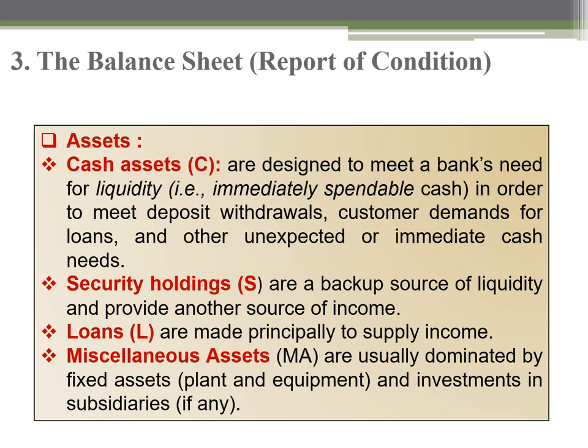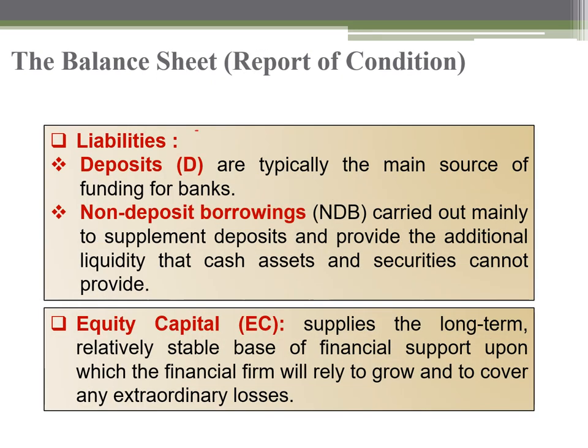Cash assets are designed to meet the bank's needs for liquidity to cover deposit withdrawals and customer demands. Security holdings serve as a backup source of liquidity. Loans are made principally to supply income through interest. Miscellaneous assets include fixed assets of the bank and any investments in subsidiaries if available.